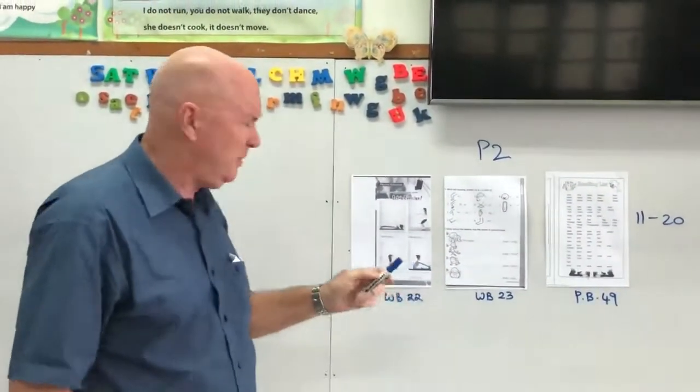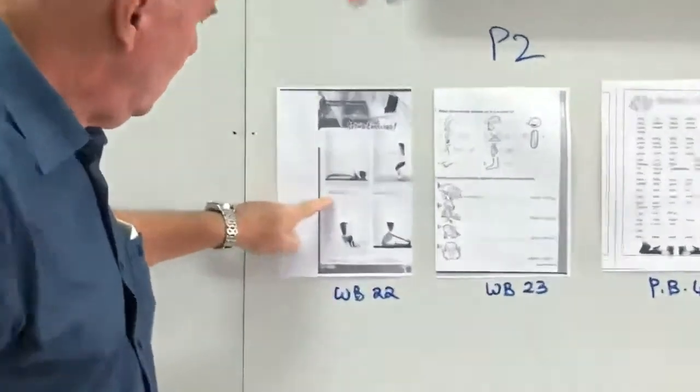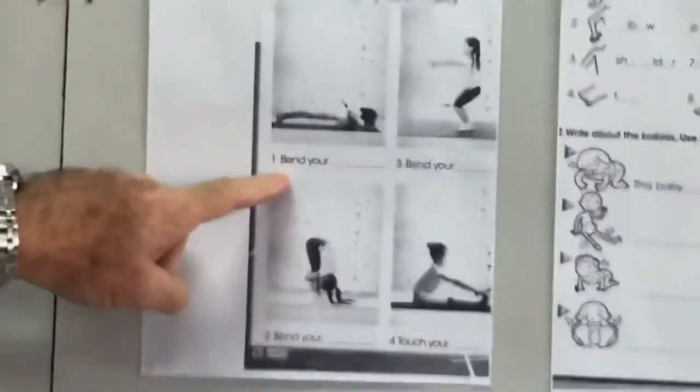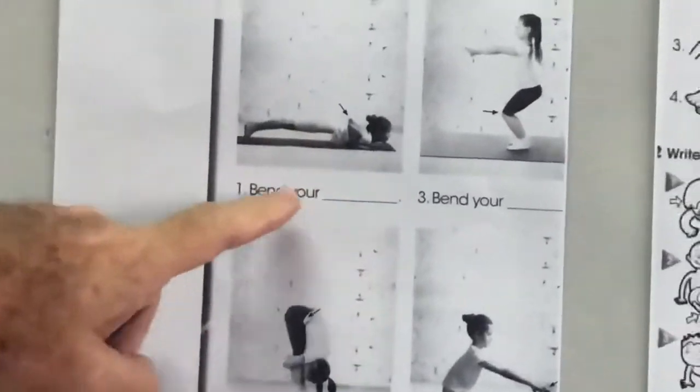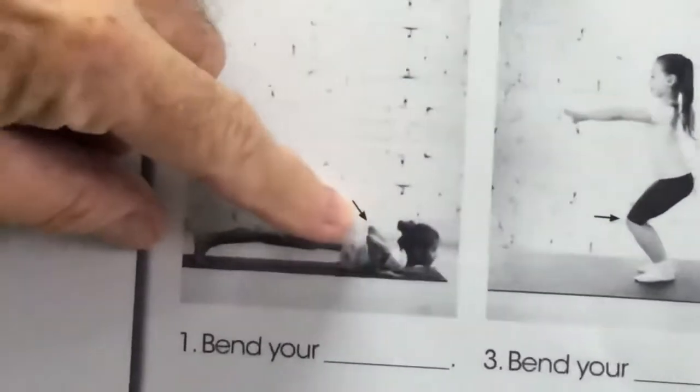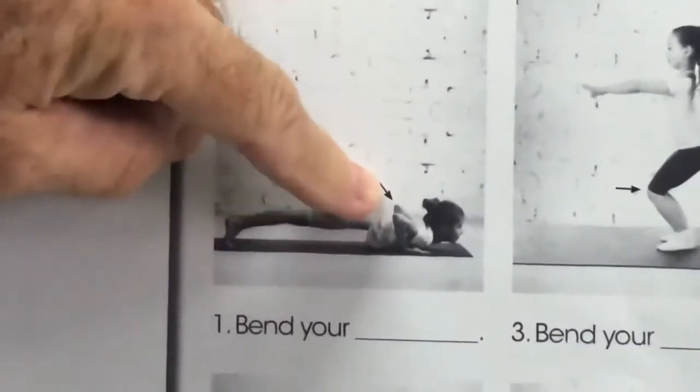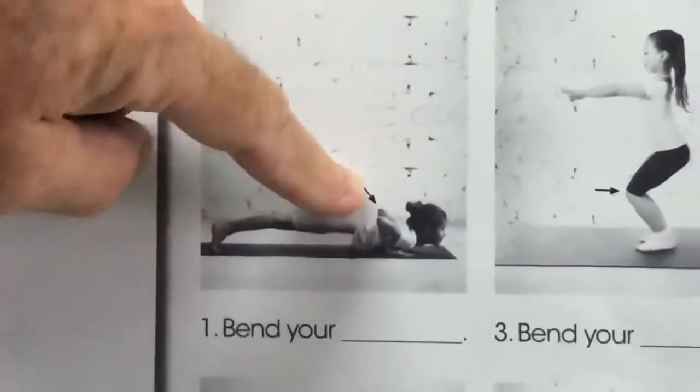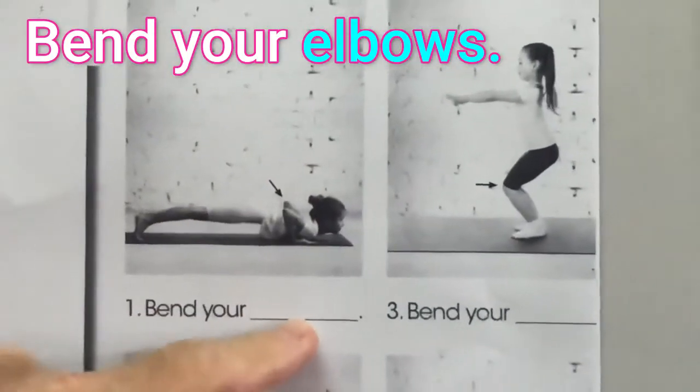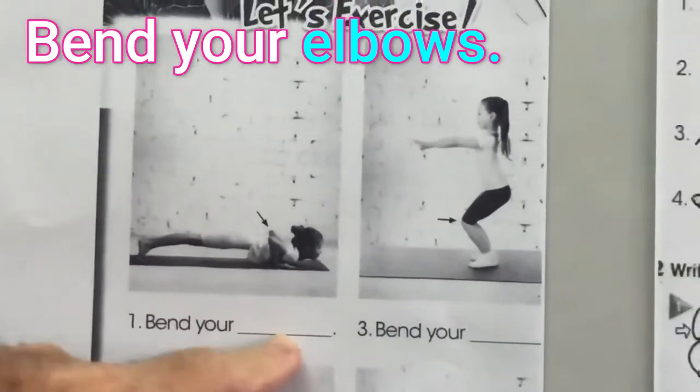Let's have a look closely. Look at the part of the body. What's she doing? Bend your... looks like this is a press push-up or the plank. Bend your... because that's going to be bend your elbows, isn't it? Bend your elbows.